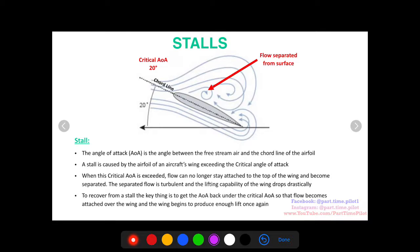To recover from a stall, the key thing is to get the AOA back under the critical angle of attack so the flow becomes reattached over the wing. This is why you want to pitch down as soon as you stall to get back below that critical angle of attack.